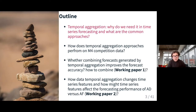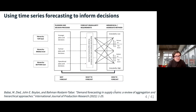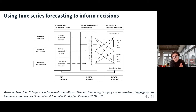Let's start by talking about why we need temporal aggregation and what the common approaches are. As we all know, we use time series forecasting to inform decisions, and decisions are generally made at multiple levels — operational, tactical, or strategic — corresponding to short-term, mid-term, or long-term forecasting. The decision we're trying to inform will determine the level of forecast we need to generate. The fundamental thing to understand is we need to generate forecasts at various levels of temporal granularity.